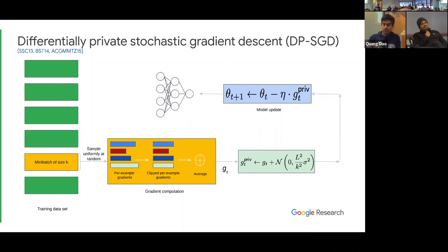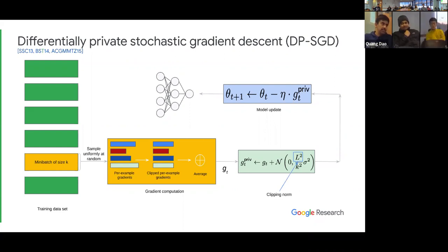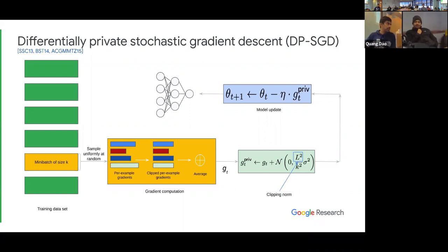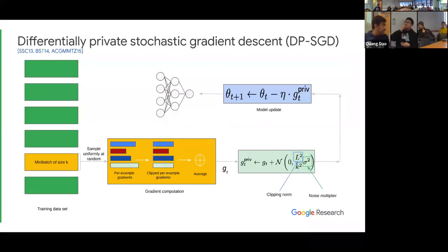One thing to remember is the scale of the Gaussian noise. L is the clipping parameter — the scale at which you are bounding. Sigma is what I will call the noise multiplier — it is the scaling of the sensitivity. Sensitivity is the amount by which one data sample can change the gradient, and sigma squared is the scaling of the sensitivity. Notice this is a scale-invariant quantity, and privacy only depends on this object. When I'm adding the noise and averaging k objects, my noise is at the scale of 1 over k, and the sensitivity is also 1 over k.